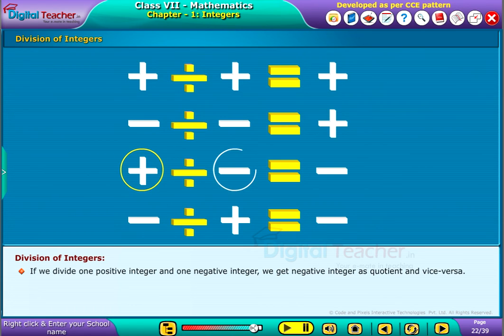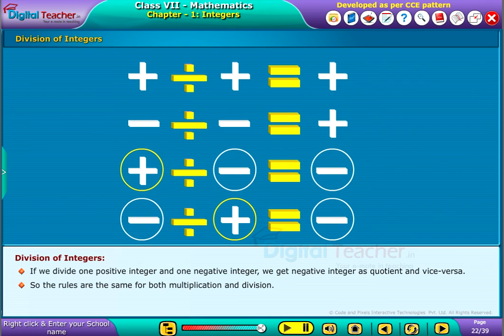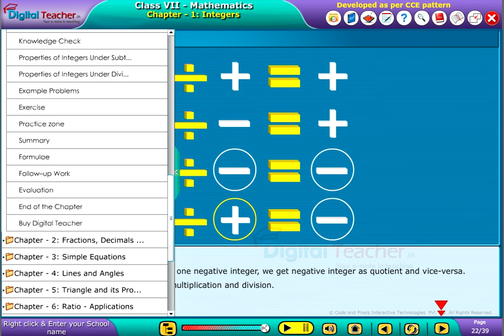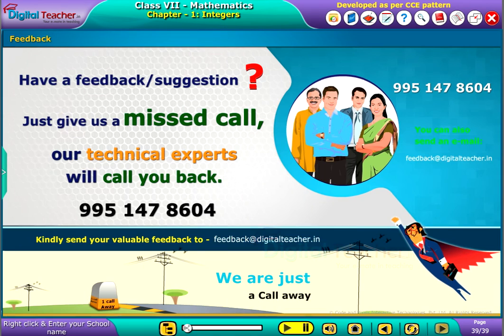So the rules are the same for both multiplication and division.